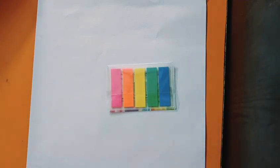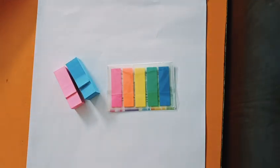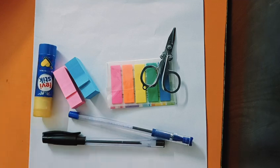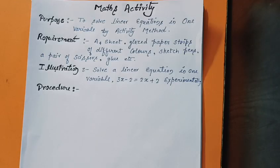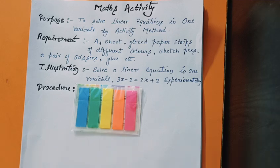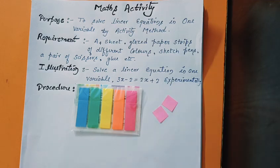The requirement for this activity is white sheet of paper, A4 sheet, some colorful paper strips, sketch pen or simple pen, a pair of scissors, and glue. For this procedure, take some rectangular strip of paper you can cut of any dimension and take some square strips of paper of different colors like this.